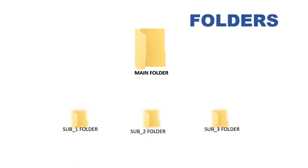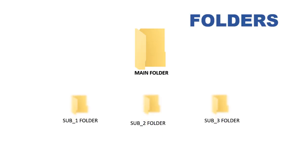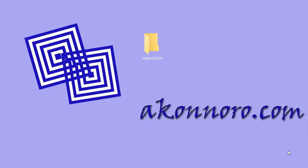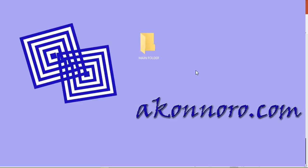For the sake of this lesson, we have a main folder on the desktop which includes three subfolders: subfolder one, subfolder two, and subfolder three. Within subfolder one we have music files, within subfolder two we have PDF files, and within subfolder three we have test files. We are working on Windows 10.